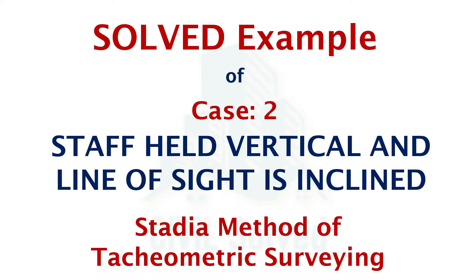Hello everyone. In this video I am going to solve an example related to case number 2 of the Stadia method of tachymetric surveying, in which the staff is being held vertical and the line of sight is inclined.